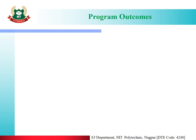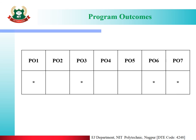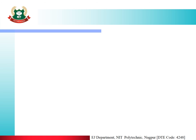Now the program outcomes — we can see P1, P3, P6, and P7 mapping, along with P5. Thank you.